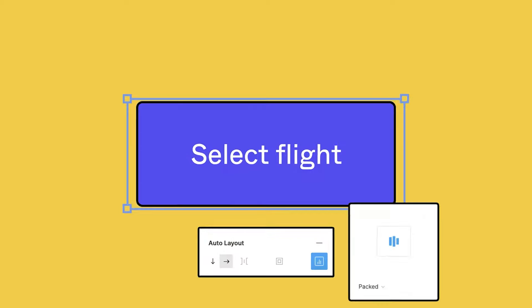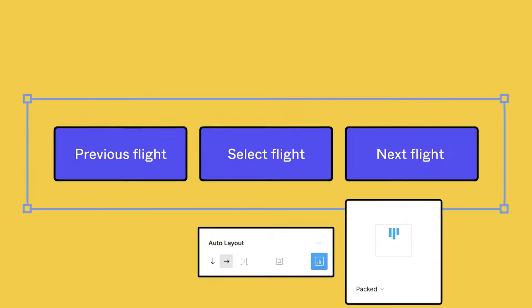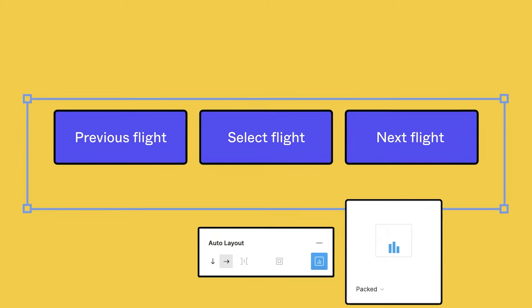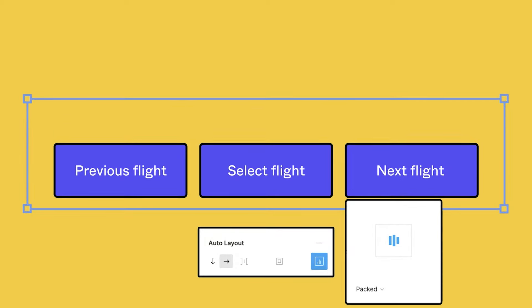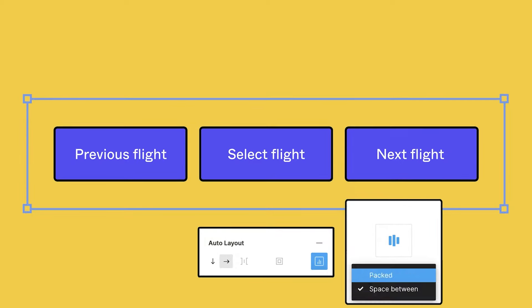The good news is Auto Layout is actually pretty simple and intuitive once you get your head wrapped around it, but there are a lot of properties involved. So before we jump into a real design, let's get the lay of the land with a really simple example using these shapes here.